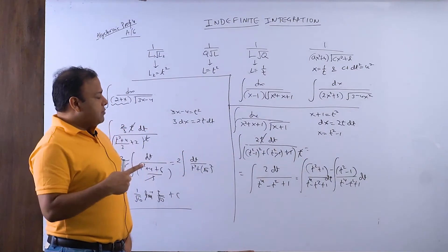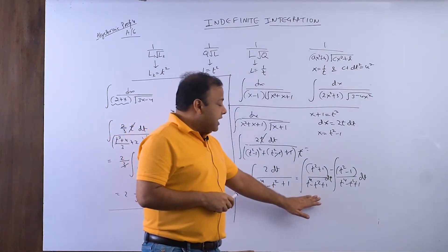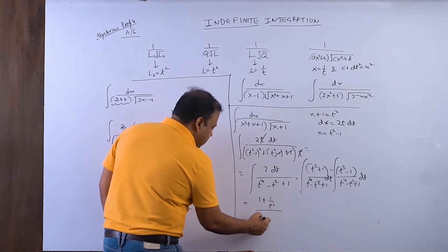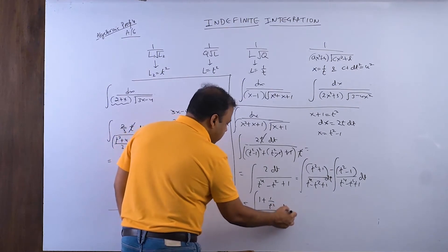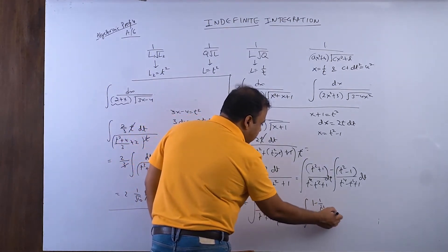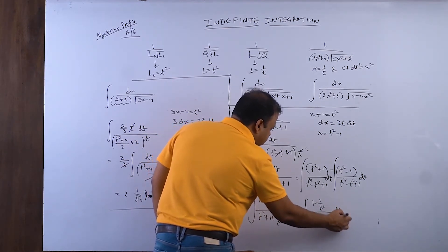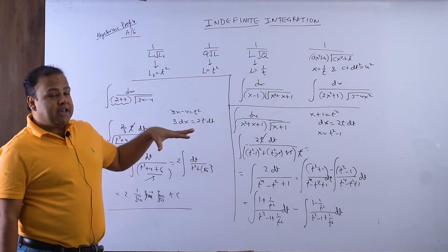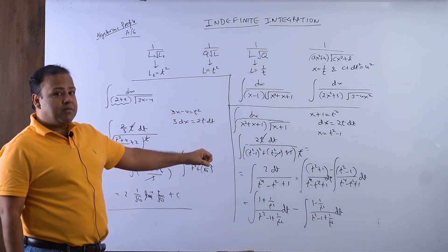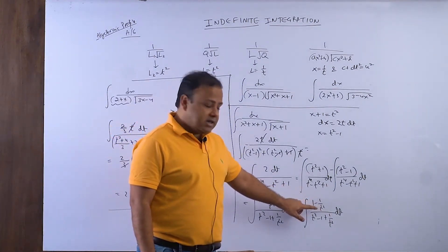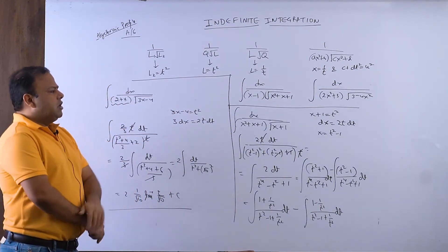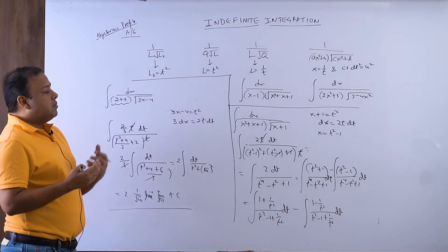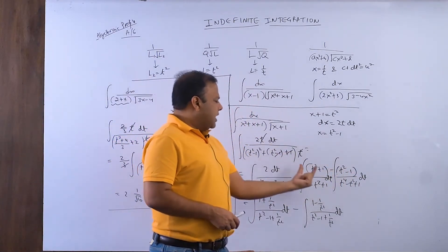In the first part after dividing by t², we integrate using the substitution for (t − 1/t), and in the second part using (t + 1/t) — exactly like the last question of profile A5. The question is lengthy but the concept is the same as what was done in profile A5. So that completes the Q·√L example.